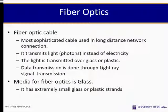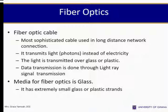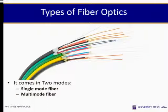Fiber optic cable is most commonly used for long-distance network connections. It transmits light, termed photons, instead of electricity. The light is transmitted over glass or plastic. Data transmission is done through light ray signal transmission, and the media for fiber optics is glass — extremely small glass or plastic strands. Fiber optics comes in two modes: single mode fiber and multimode fiber.